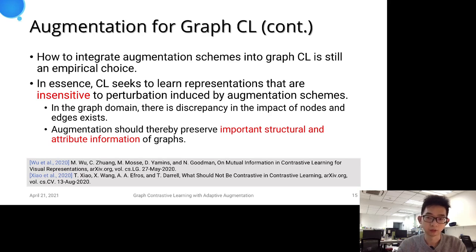That is, the transformation should not fundamentally alter its identity. Considering that there is discrepancy in the impact of nodes and edges, we argue that augmentation should preserve important structural and attribute information of graphs, and this is the main motivation of our work.